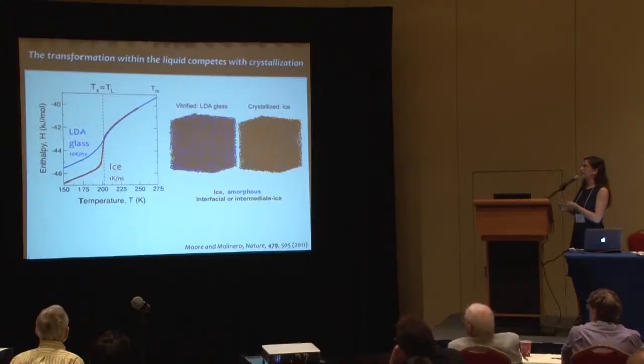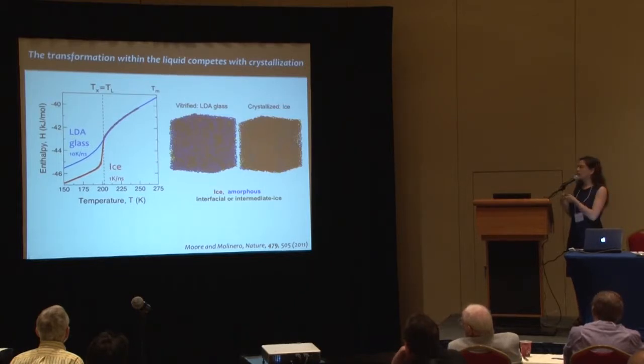We have two ways of cooling water: fast enough to vitrify, or slower to reach the crystal state. Showing enthalpy as a function of temperature for water cooled at two rates: one rate produces the LDA glass in simulations — about ten-thousand times faster than experiments because this model crystallizes faster. What you see is a transformation where enthalpy goes down and lands into the glass state, with the very fast enthalpy decrease corresponding to the heat capacity peak. If you go slower, it crystallizes.